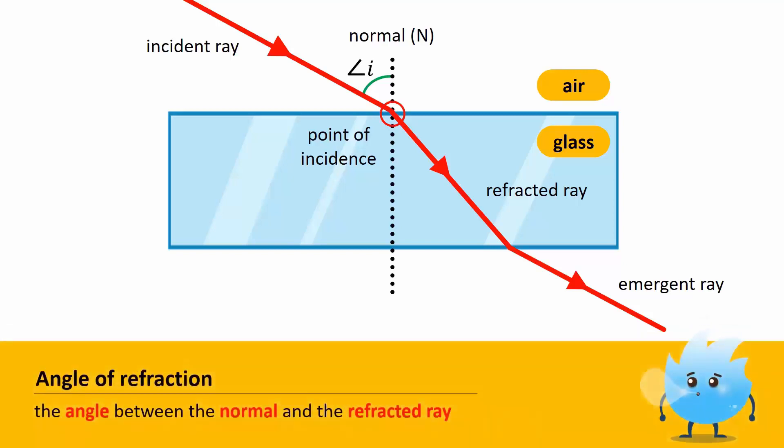The angle between the normal and the refracted ray is called the angle of refraction, which is denoted by R. Observe that both angles are measured from the normal.